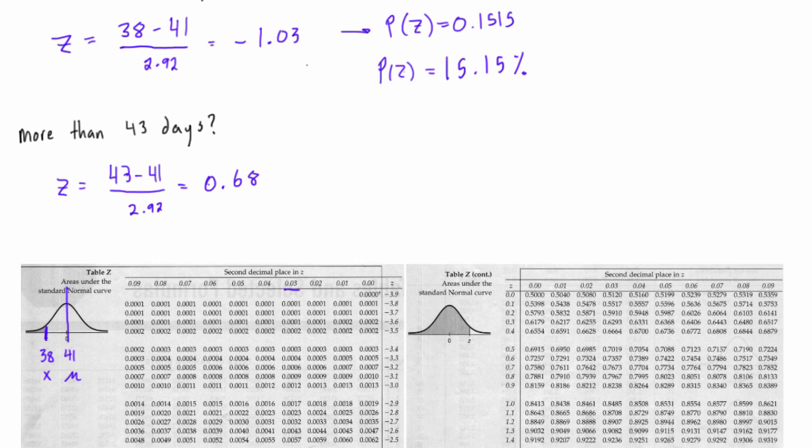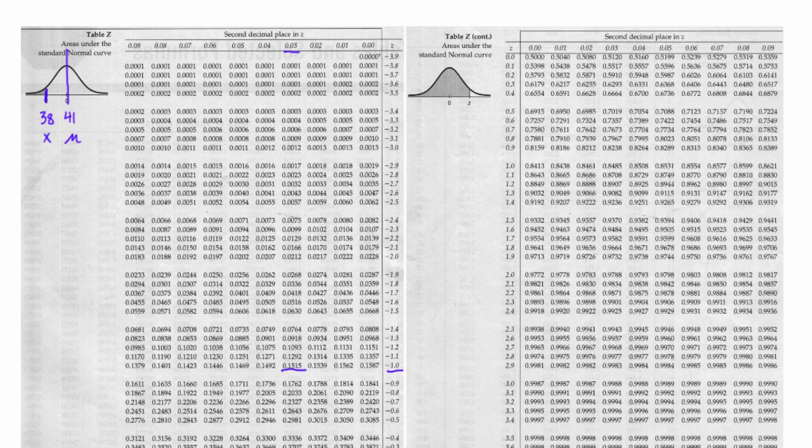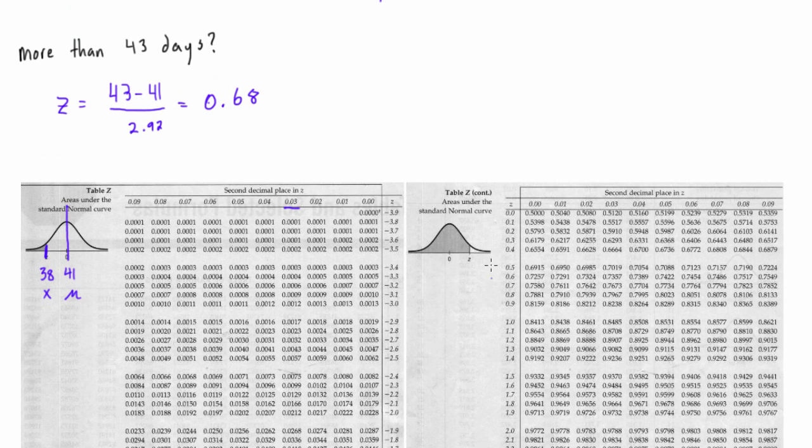We're going to come down into our z-score tables. We have a positive value, so we're not using the negative values, we need to find the positive value, and so 0.68. Let's come down, we'll be up close to the top here. So we have 0.6, and 0.8 will be right here. So that would give us 0.68.